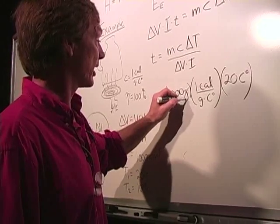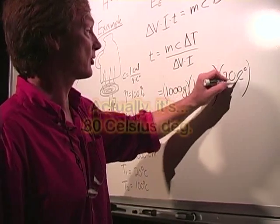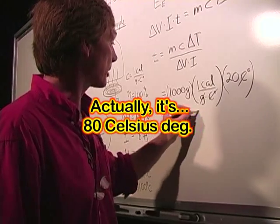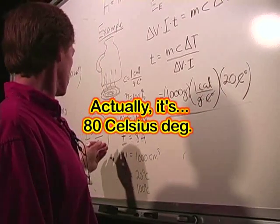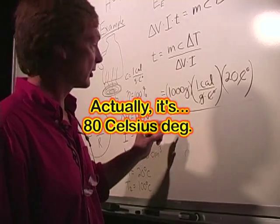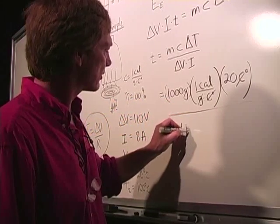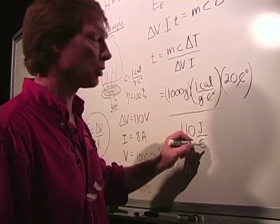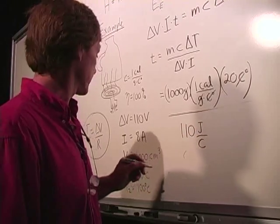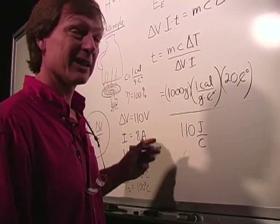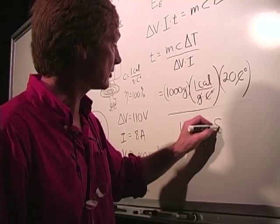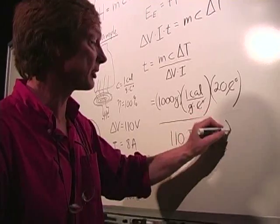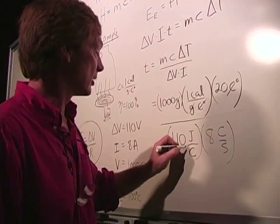Well, so far, I can get rid of my grams and my Celsius degrees. And so I've got calories of energy on top. On the bottom, I've got the voltage, which is 110 volts. And instead of 110 volts, I'm going to call that 110 joules per coulomb, because that's what a volt is. I've got a current of 8 amps. Instead of amps, I'm going to call it 8 coulombs per second, because that's what an amp is. It's the rate at which that charge moves. The coulombs cancel.